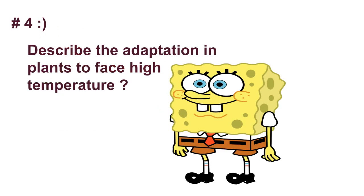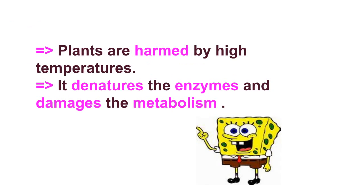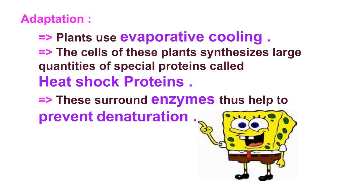Question number four: describe the adaptation in plants to face high temperatures. Plants are harmed by high temperatures — it denatures the enzymes and damages the metabolism. The adaptation is that plants use evaporative cooling, or the cells of these plants synthesize large quantities of special proteins called heat shock proteins. These surround enzymes and help to prevent denaturation.